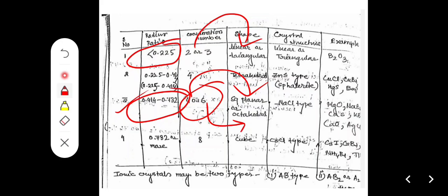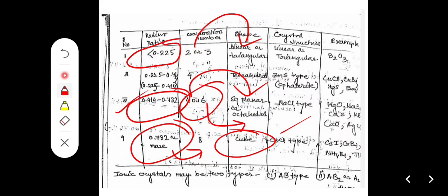If the radius ratio is 0.732 or more, the coordination number is 8 and the shape is cubic. The crystal structure is caesium chloride type. Examples include caesium chloride, caesium bromide, and NH4Br, and so on.